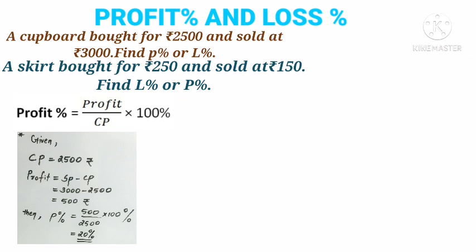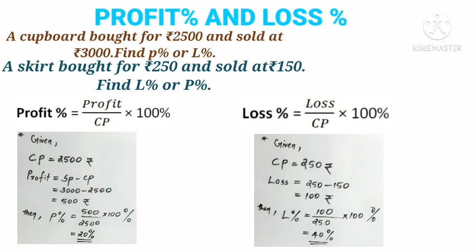Second question: a coat bought for rupees 250 and sold at rupees 150. Find loss percentage or profit percentage. Here first we have to decide whether it is profit or loss. We can see SP is less than CP, so it is loss. Loss percentage equals loss divided by cost price into 100 percentage. Here loss equals CP minus SP: 250 minus 150 equals 100 rupees. Then loss percentage equals 100 divided by 250 into 100 percentage, which becomes 40 percentage.